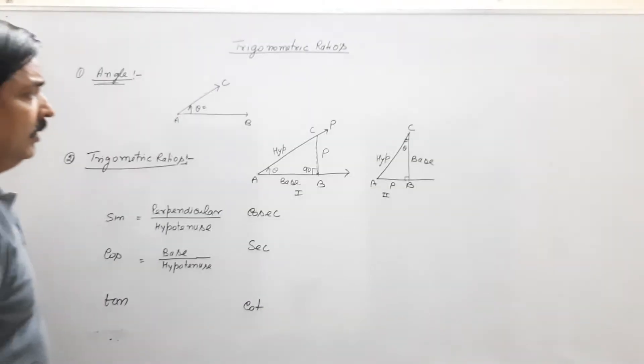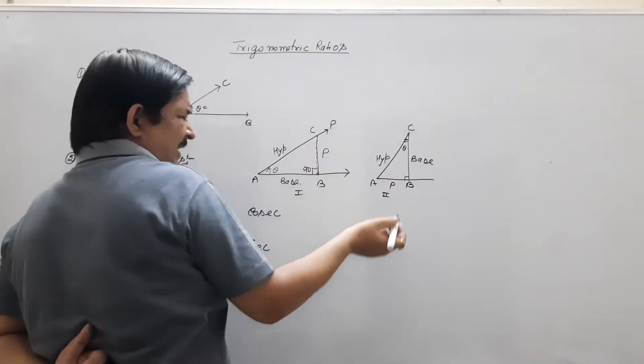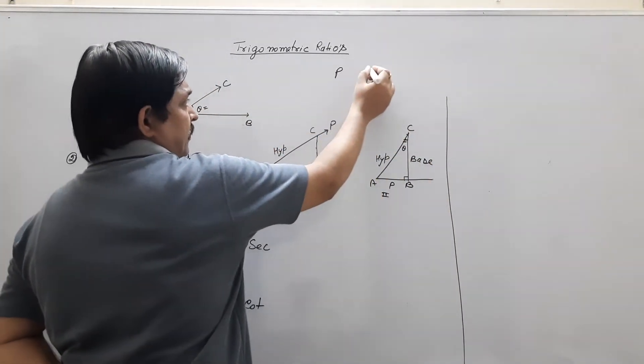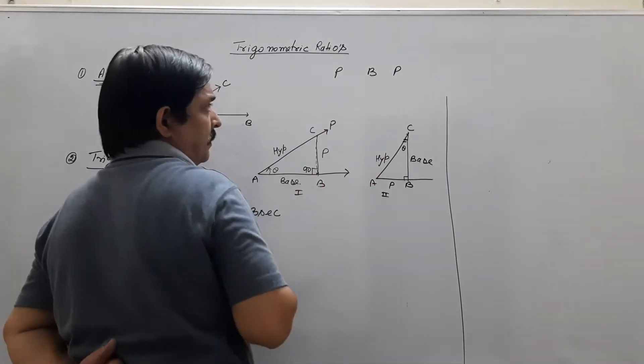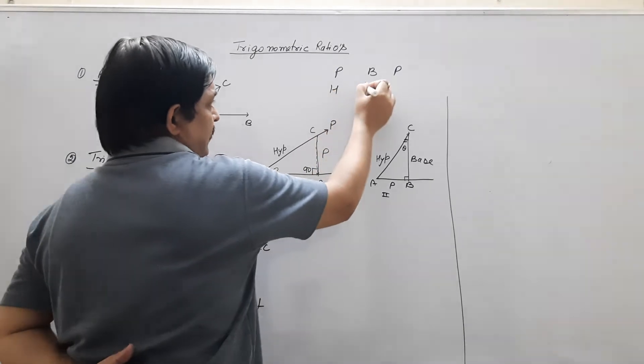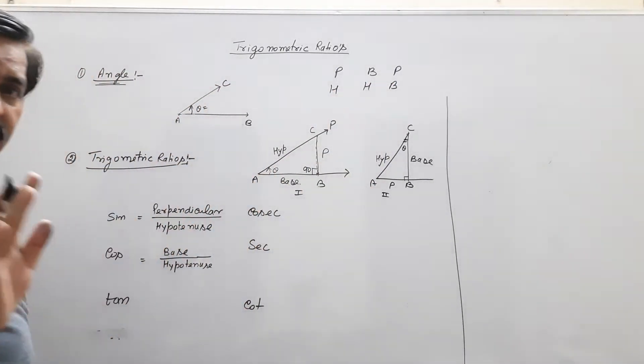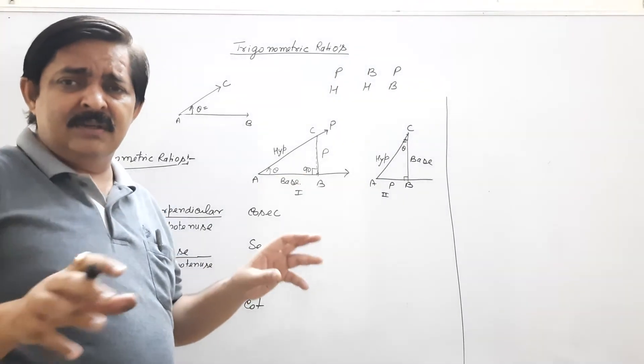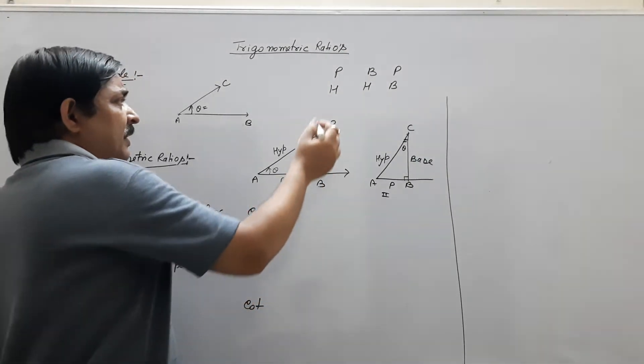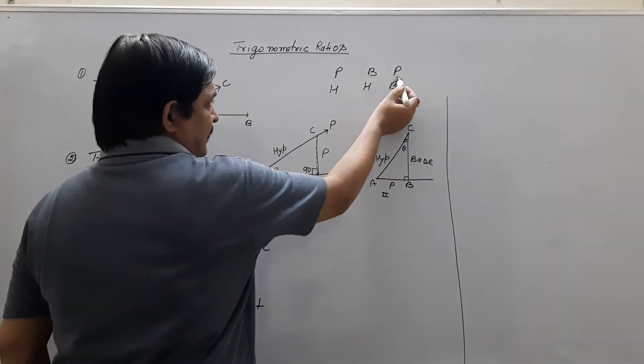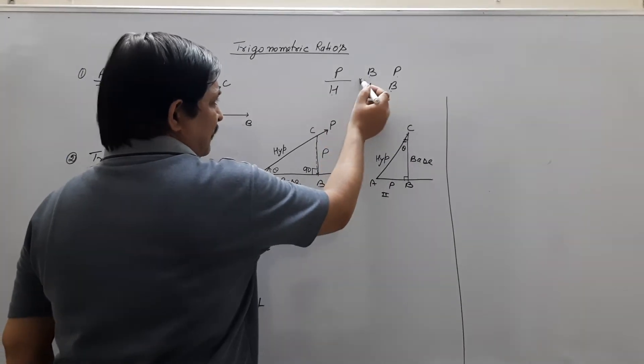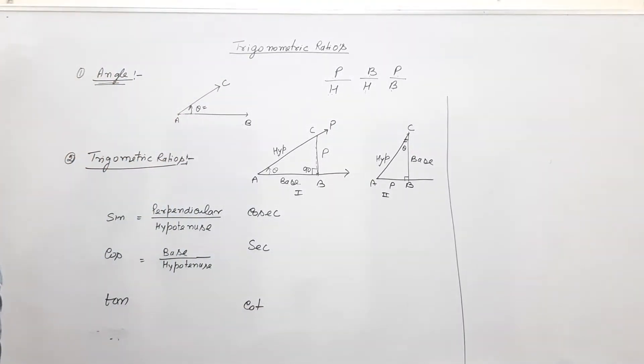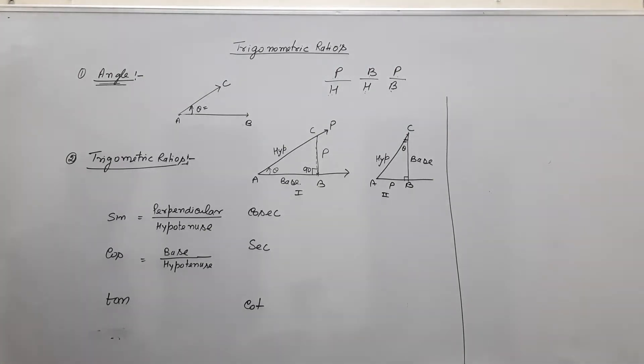And so normally we learn some relation. P, B, P, H, H, H, H, B. According to some mathematicians, they find some relation, they find some theory. You know, given that, Pandit Badri Prasad Har Har Bole. Pandit Badri Prasad Har Har Bole. Clear? That is called sin, cos and tan.